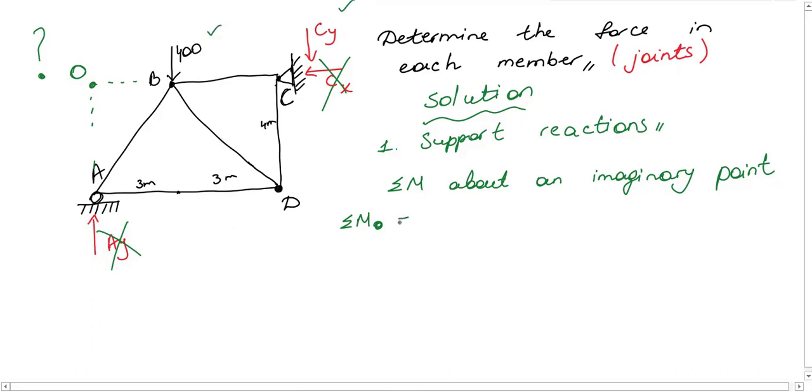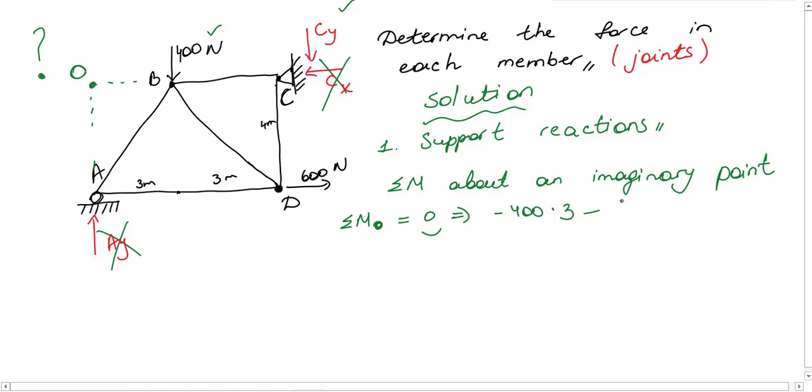So we are left with only two forces which is 400 and Cy. If I take moment about O point, minus 400 times 3. And Cy tries to turn in clockwise direction, so Cy times 6. And positive Dy which is 600 times the vertical distance which is 4. After calculating this, I find Cy as 200 Newton.